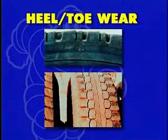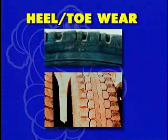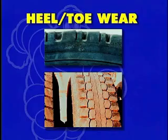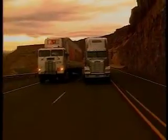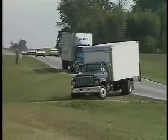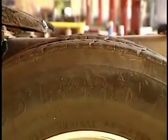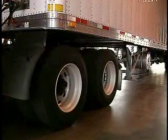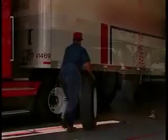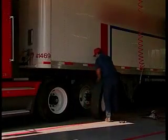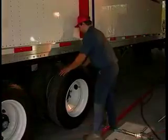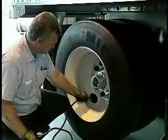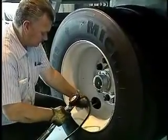With heel toe wear, each tread block around the entire circumference of the tire is worn in a sawtooth fashion from the leading edge to the rear of the block. This wear results from extreme rubber slippage in high-torque applications such as steep grades and pickup and delivery operations. This wear is often caused by mismatched duals or uneven inflation pressures between tires in a dual assembly. Changing the direction the tire travels or rotating it can minimize this wear.